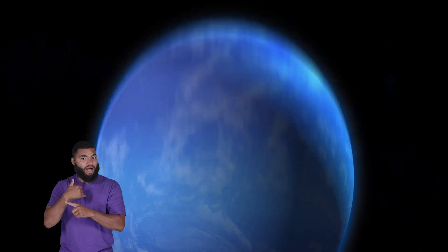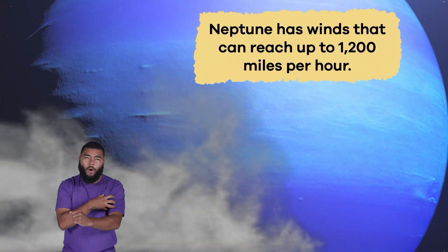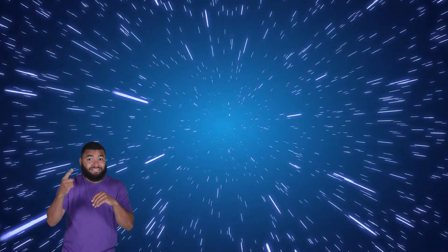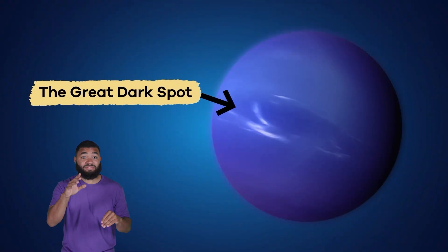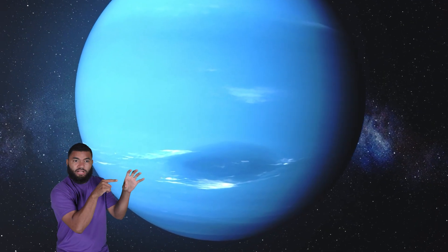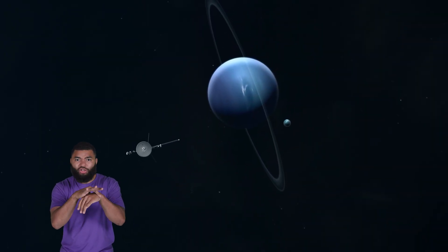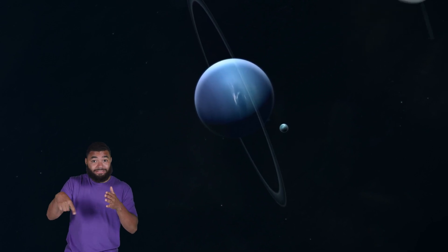Of all the planets in the solar system, Neptune has some of the wildest weather. Famous for its powerful storms, Neptune has winds that can reach up to 1,200 miles per hour. That is faster than the speed of sound. The Great Dark Spot is one of Neptune's massive storms. This storm is so big, it is about the size of the Earth! Seriously! Scientists use telescopes and spacecraft like Voyager 2 to study this volatile weather.